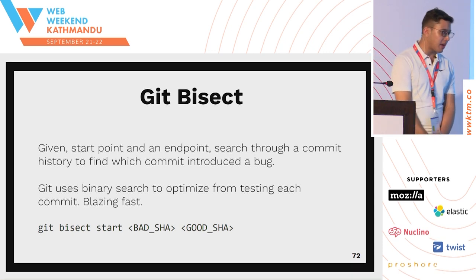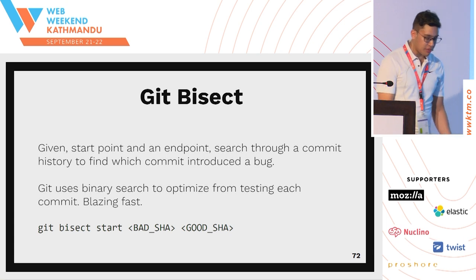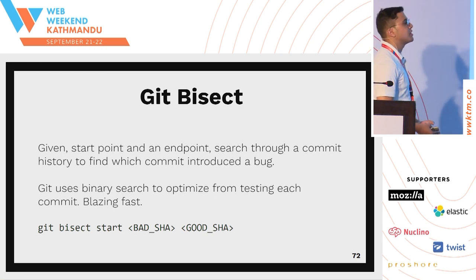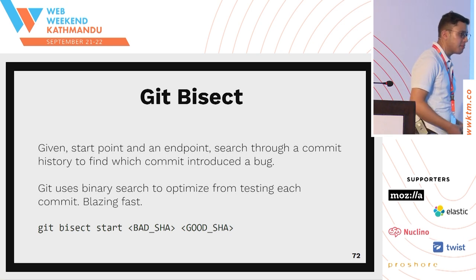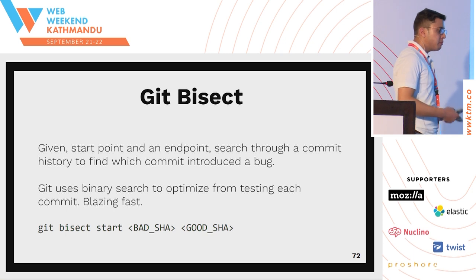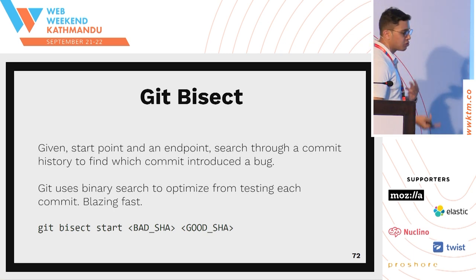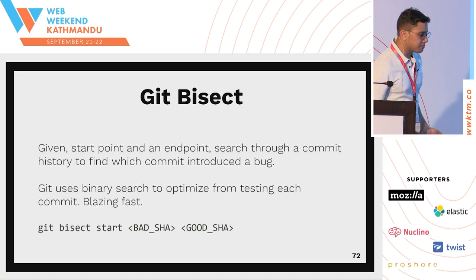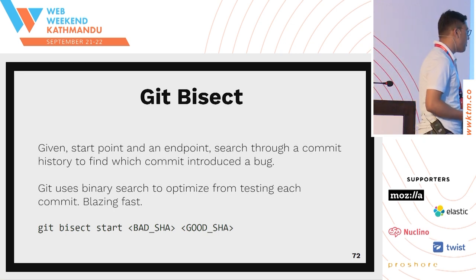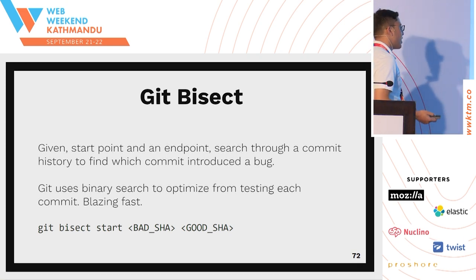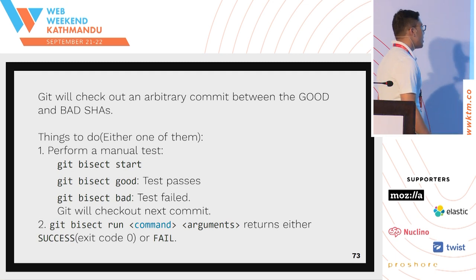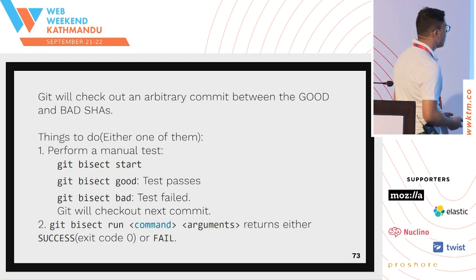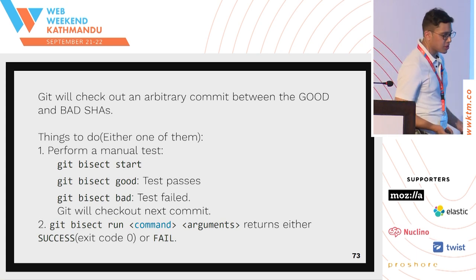Git bisect is an important tool. Git bisect checks which commit introduced any issues. There are two ways to find errors: one way is you replay commits manually running tests each time, but git bisect is better because it uses binary search to optimize the process. You use git bisect start, give it a bad SHA and a good SHA where you know tests haven't broken. If the test passes, you say git bisect good; otherwise git bisect bad. For automatic operations, you can use git bisect run with a command and arguments — it will return either success (exit code zero) or fail.